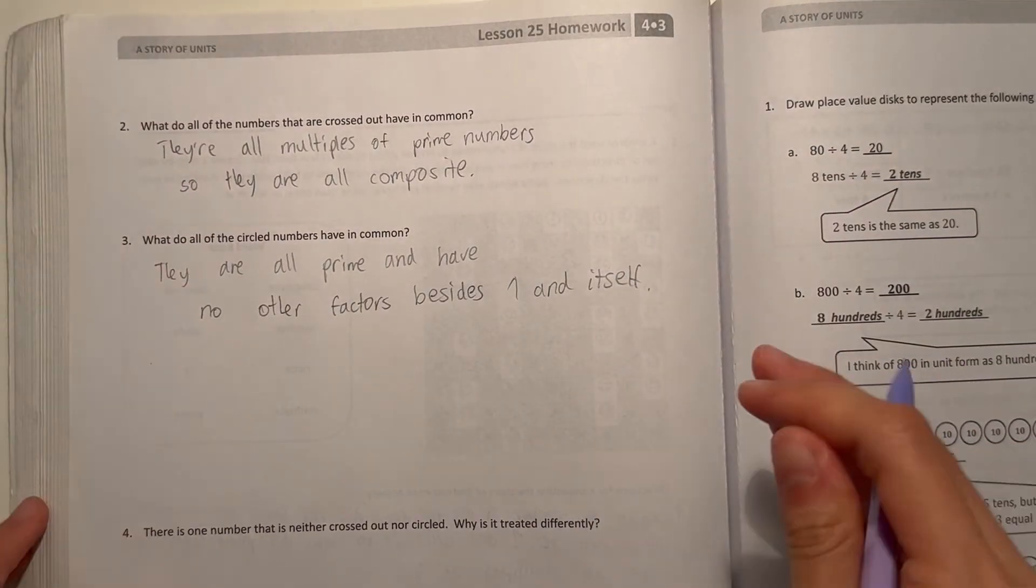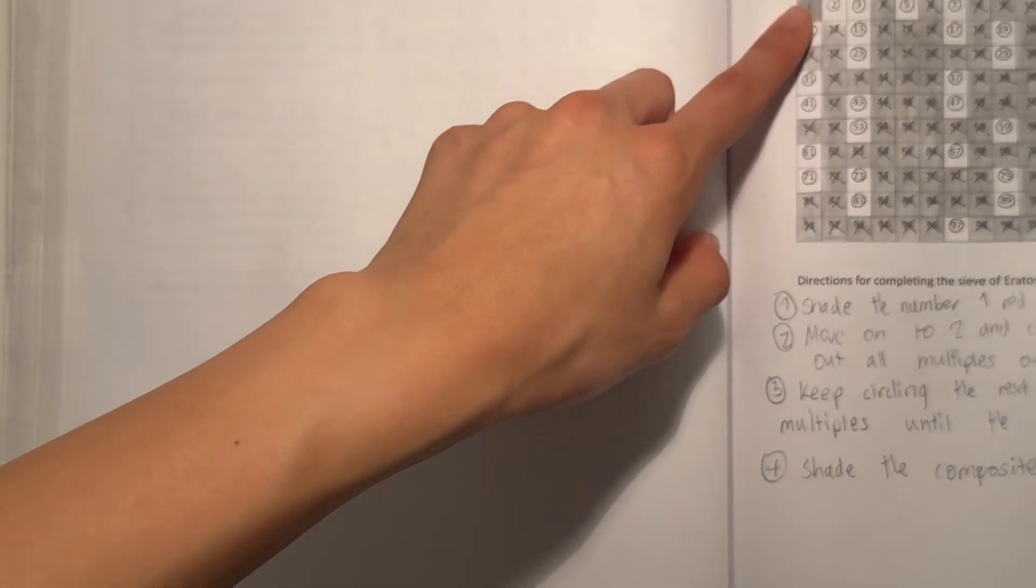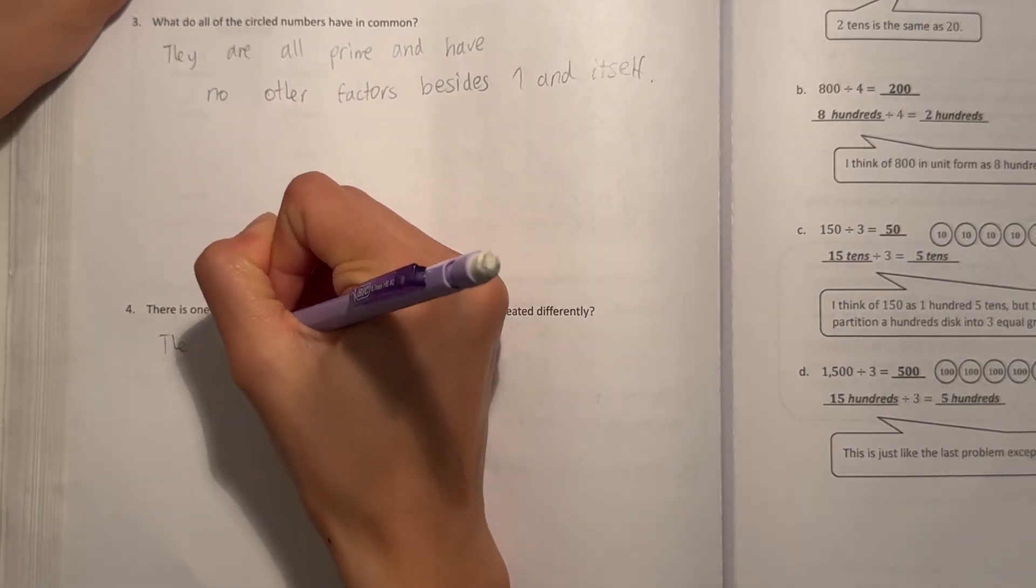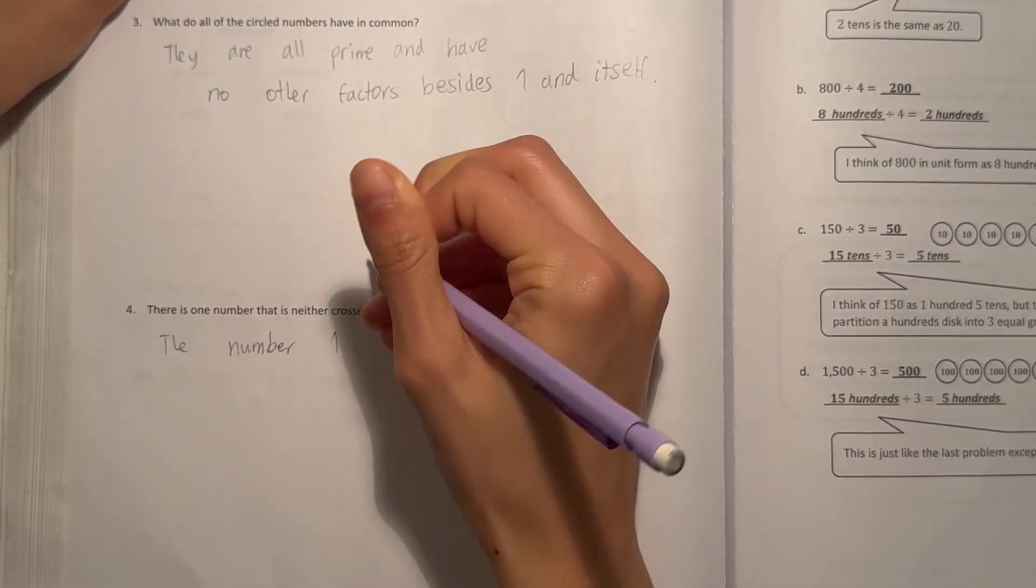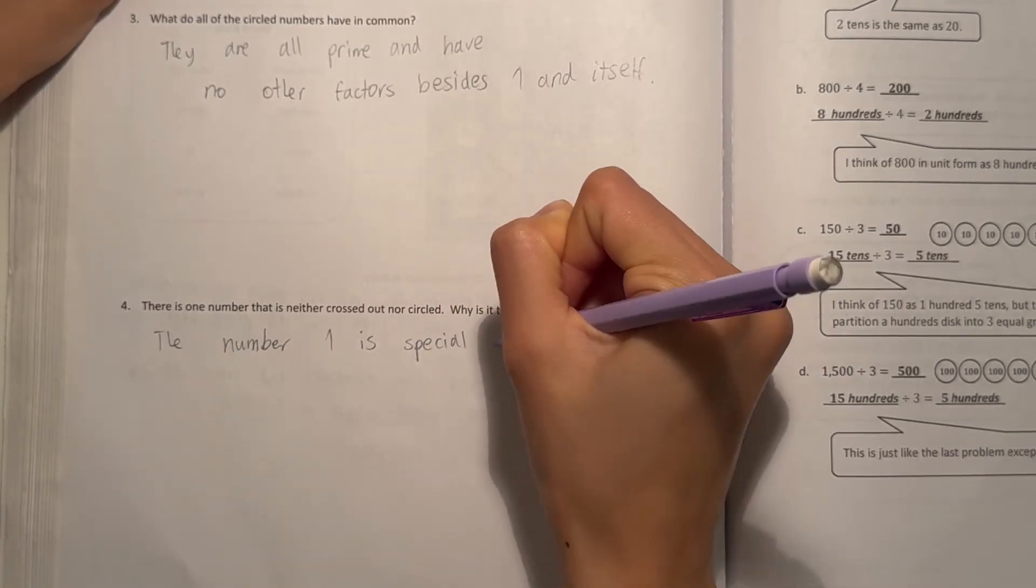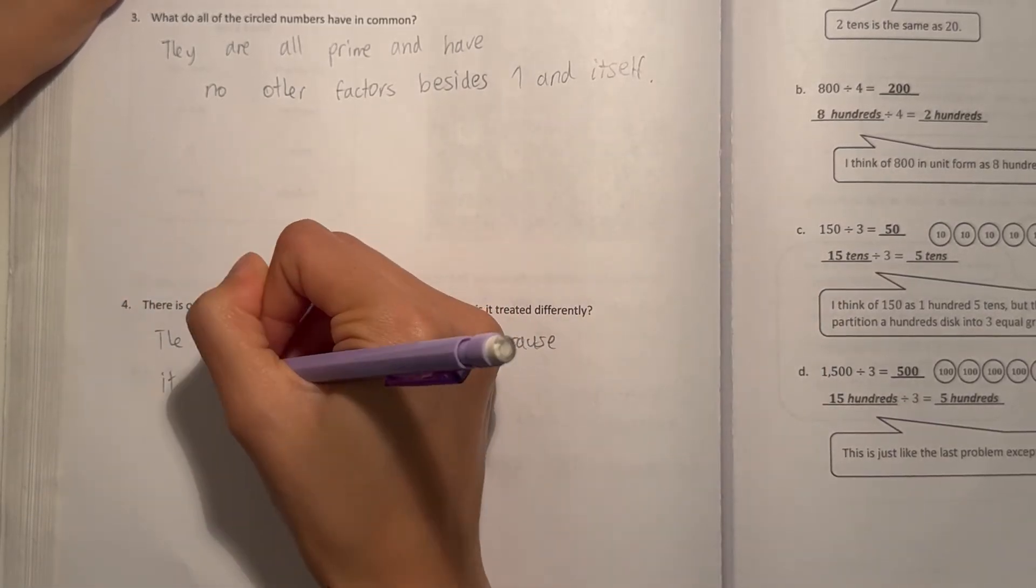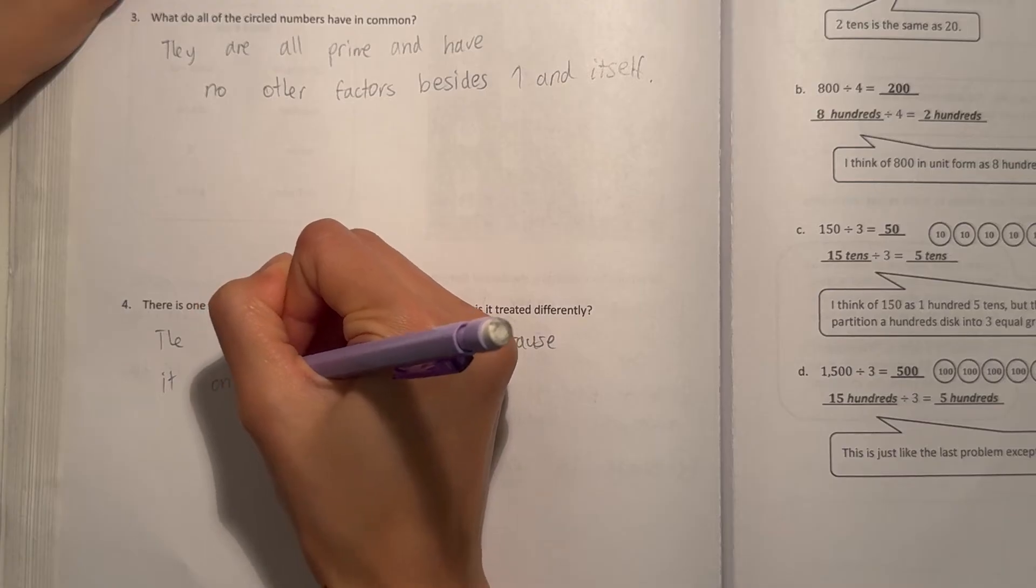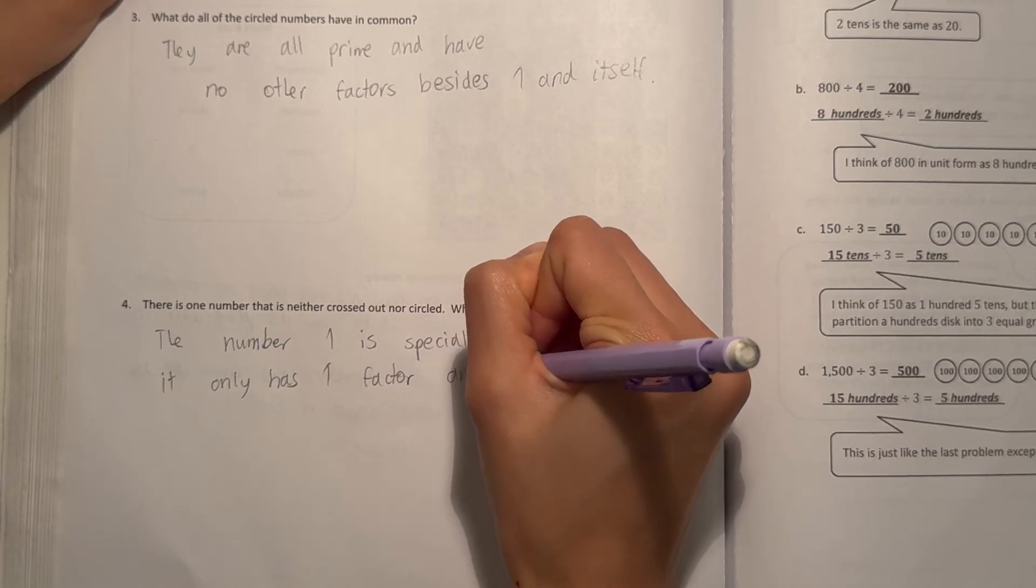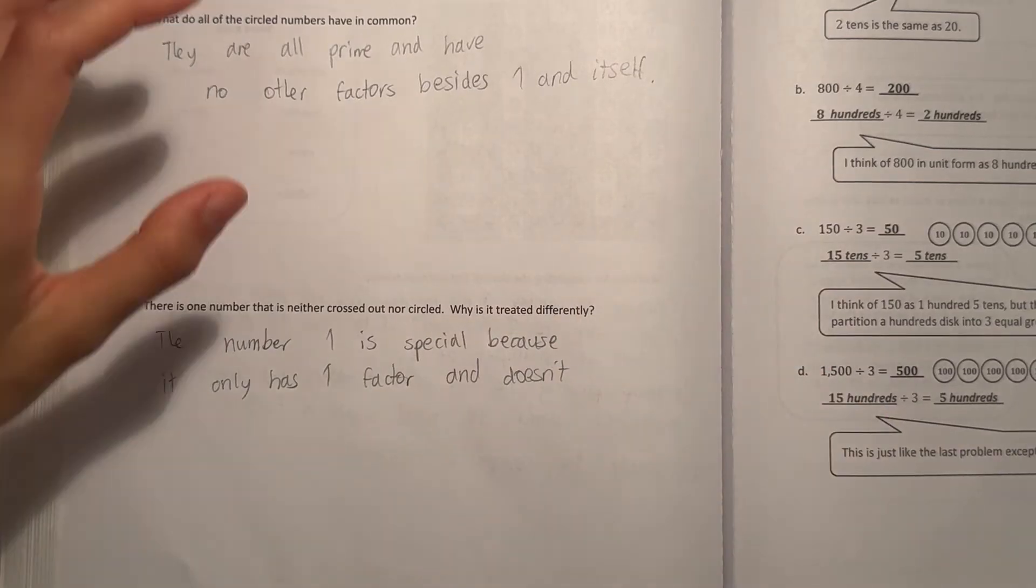And four says, there is one number that is neither crossed out nor circled, which is number one. So why is it treated differently? So the number one is special. So it's special. Because it only has one factor.